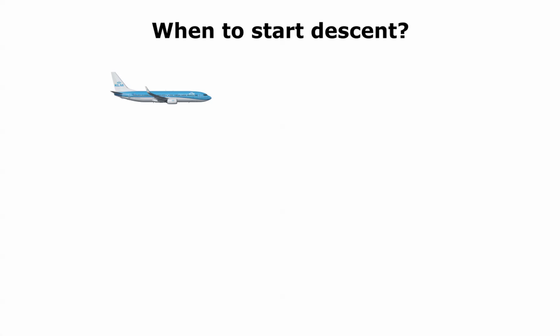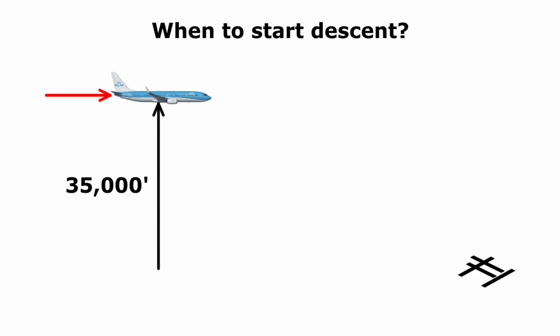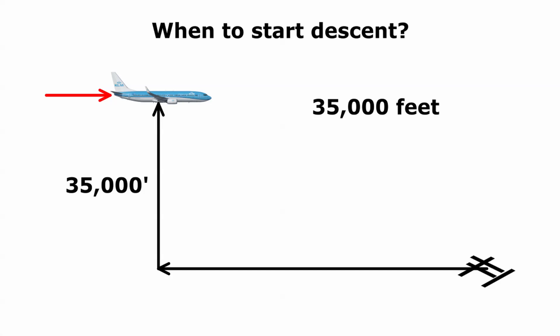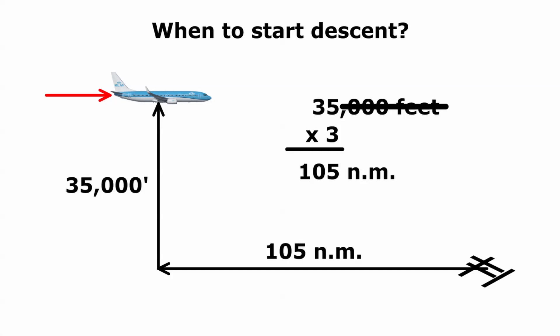Suppose we're flying a 737-800 and are coming to the end of the cruise at an altitude of 35,000 feet. Our objective is to land at this airport. The first question is how far back we should begin the descent. There's a rule of thumb to calculate this. The rule begins by striking out the thousands in the altitude, then multiplying by 3, which gives the distance in nautical miles. If the top of descent is 35,000 feet, then the descent should begin 105 nautical miles out.